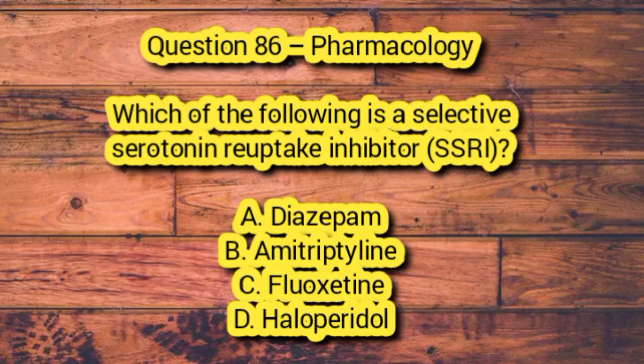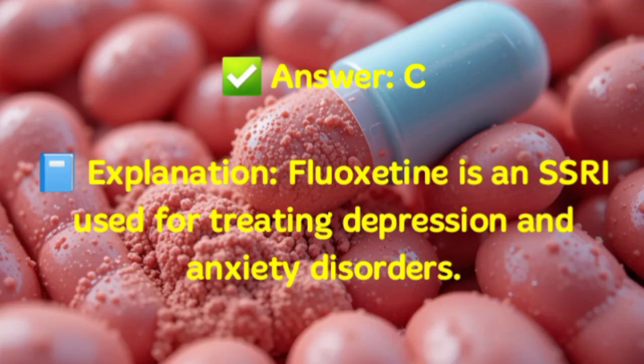Question 86 – Pharmacology. Which of the following is a selective serotonin reuptake inhibitor (SSRI)? A. Diazepam. B. Amitriptyline. C. Fluoxetine. D. Haloperidol. Answer: C. Explanation: Fluoxetine is an SSRI used for treating depression and anxiety disorders.